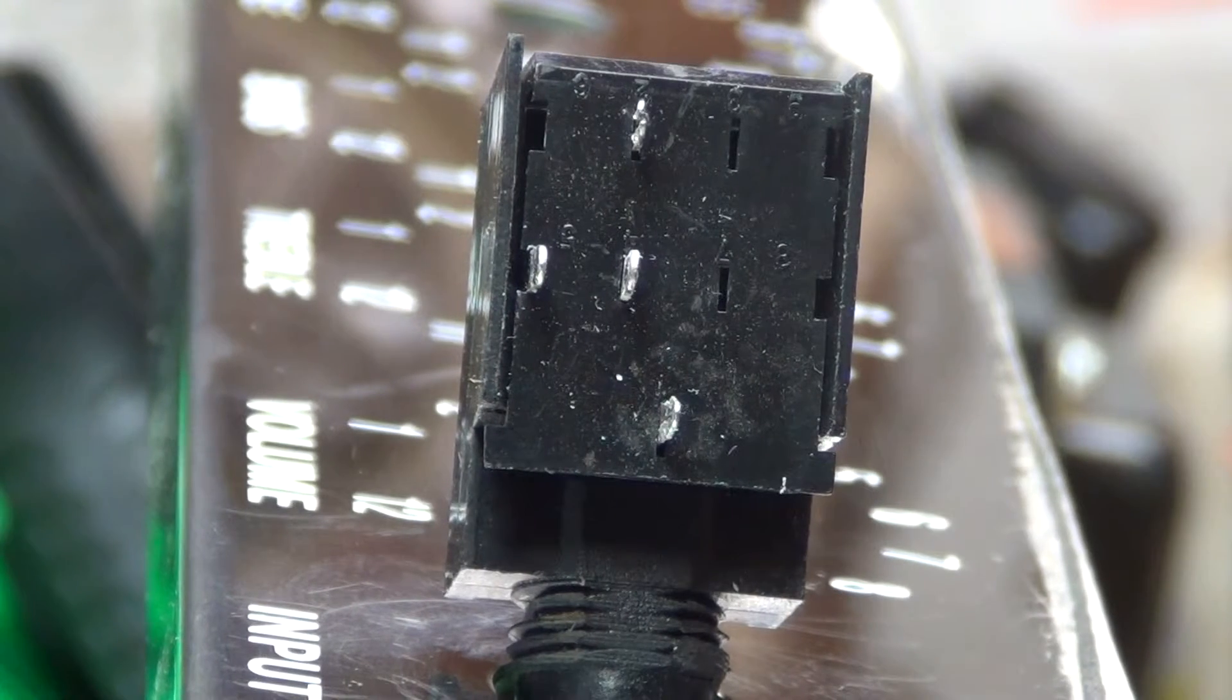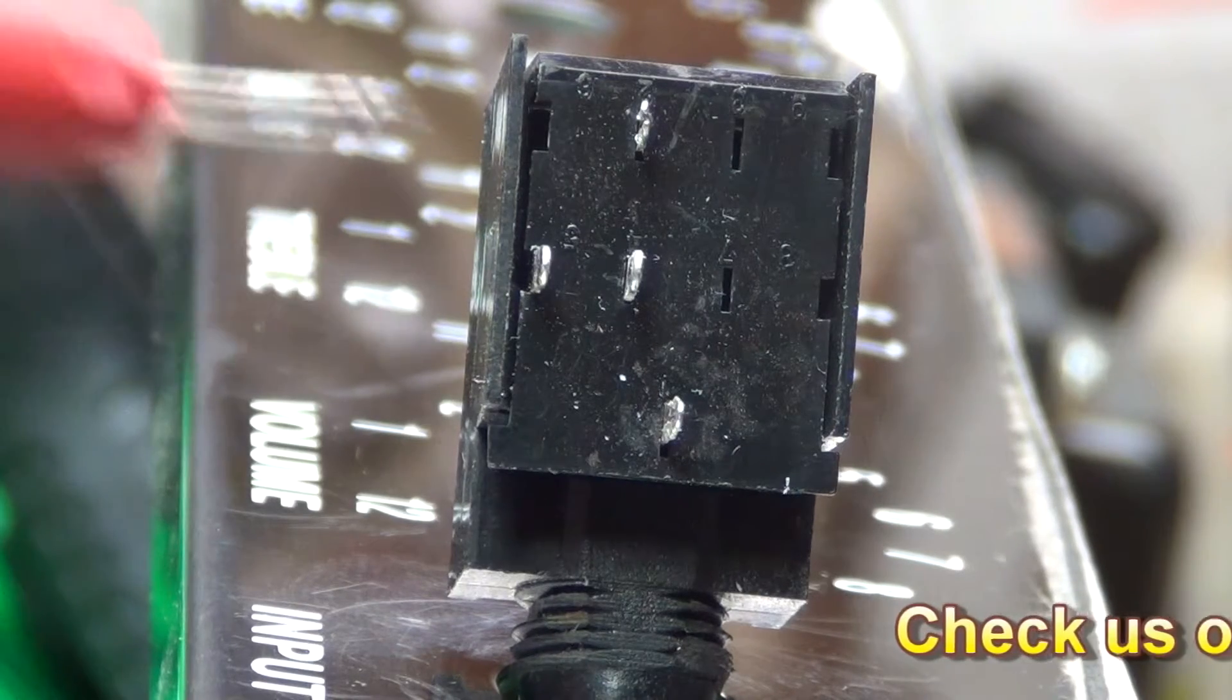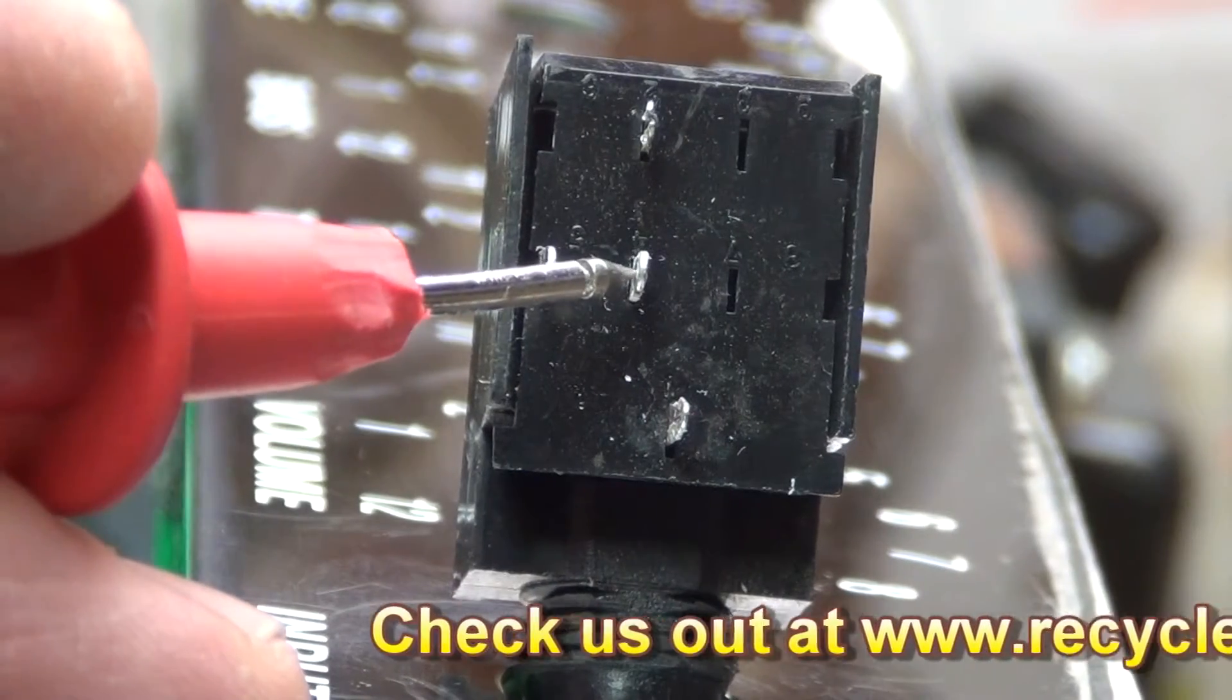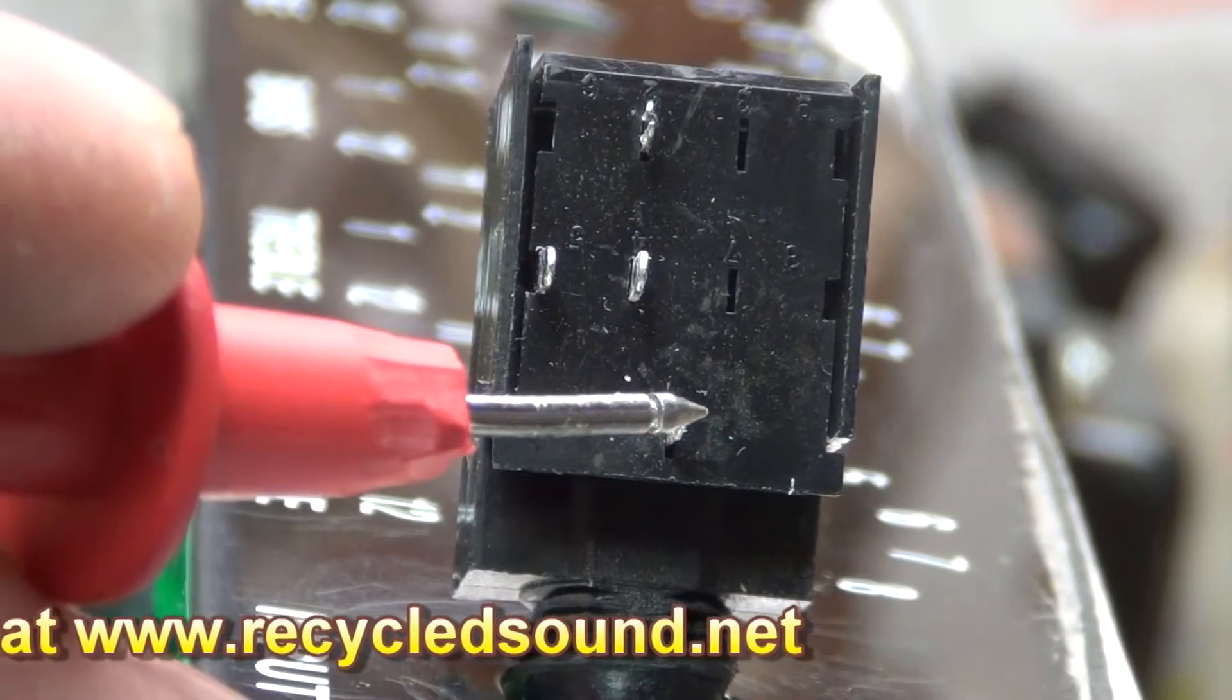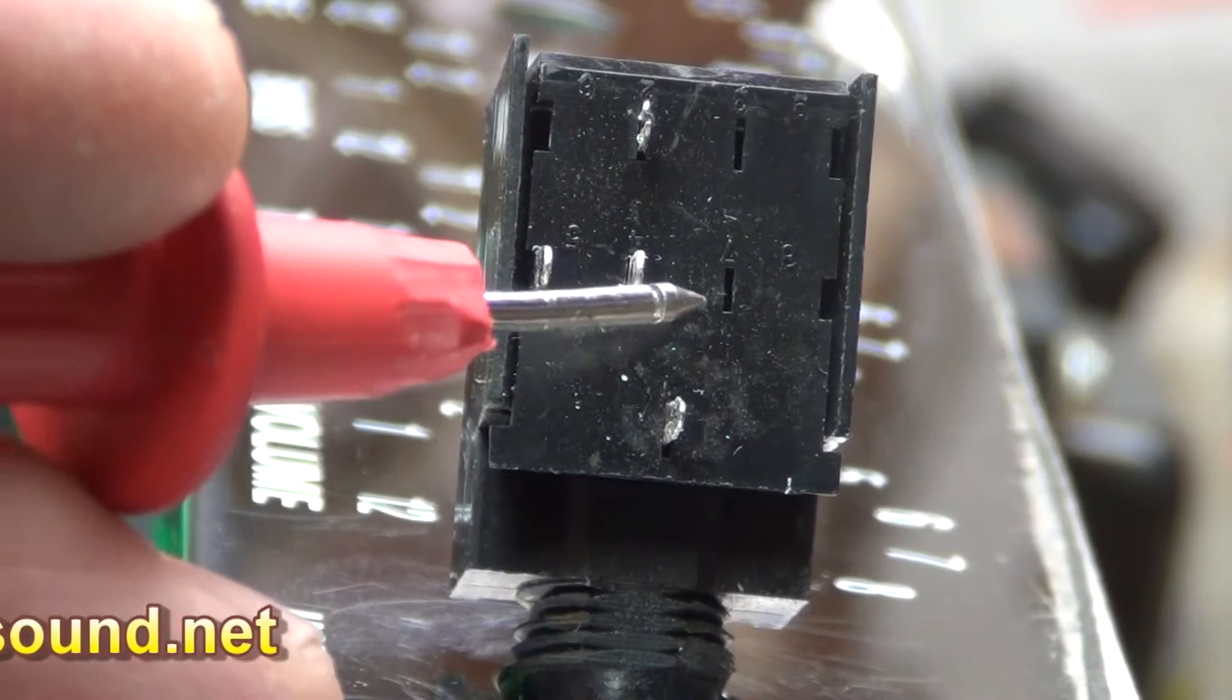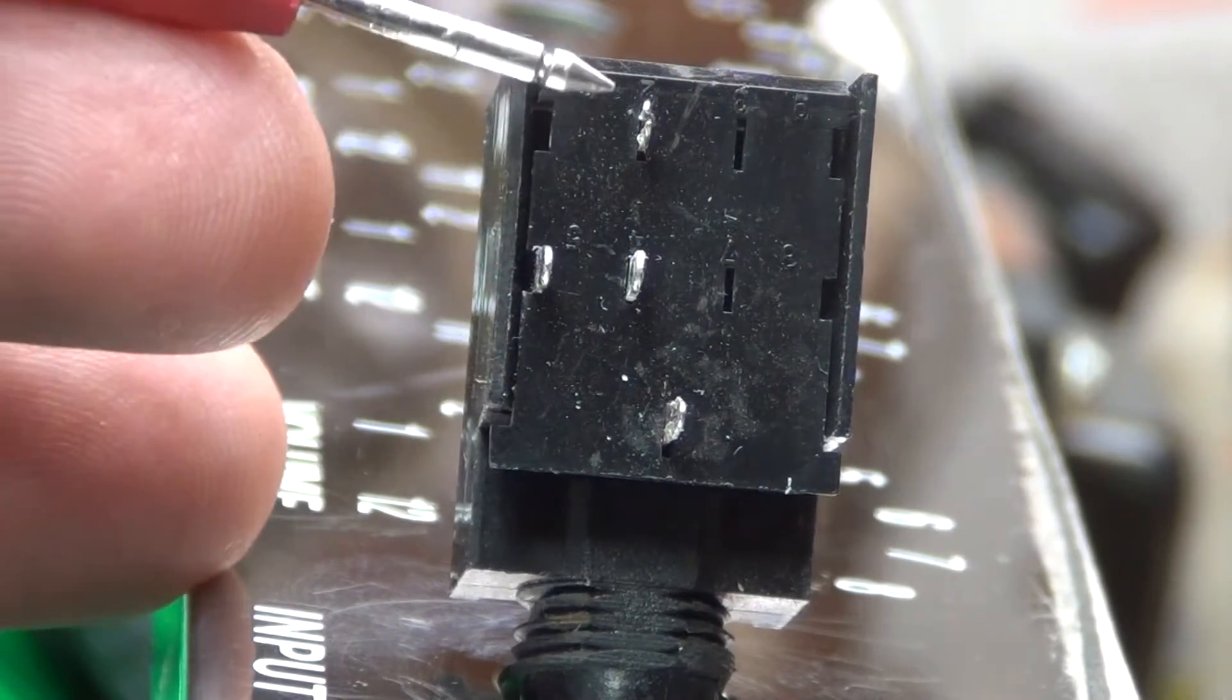Now here's our input jack removed from the board. Remember when it was on the board, this pin and that pin beeped when we touched ground. When the cable was plugged in, the shank of the cable showed continuity to these pins. And the hot pins appeared to be here and here.